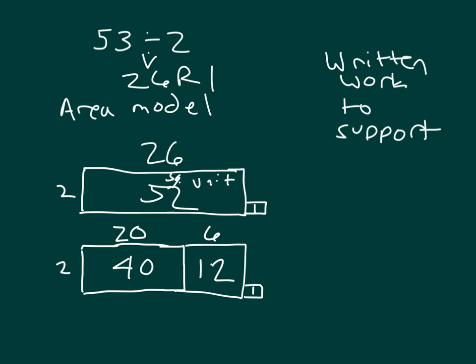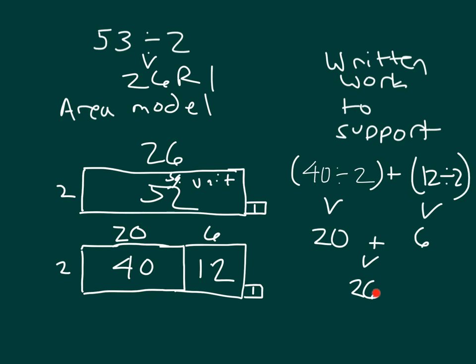Now let's look at our written work to go ahead and support our answer. What we took was 53, and we divided it by 2. When we broke it apart, we had 40, and we also had 12. Here's 40. We were dividing by 2 to find that missing side length. We'll add that together to 12, and we'll also divide 12 by 2. This will give us our quotient. 40 divided by 2 is 20. 12 divided by 2 is 6, and 20 and 6 is 26. And that was that missing side length. That is our quotient. And we did have a remainder of 1 unit. So that's how it is that we use the area model when we have remainders.